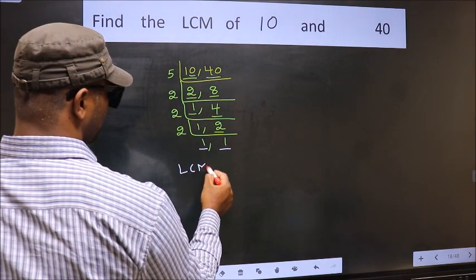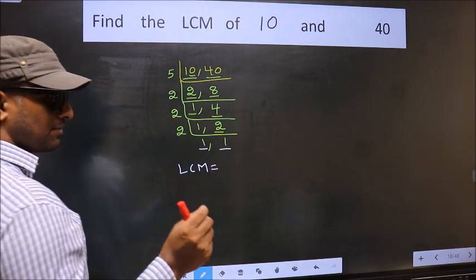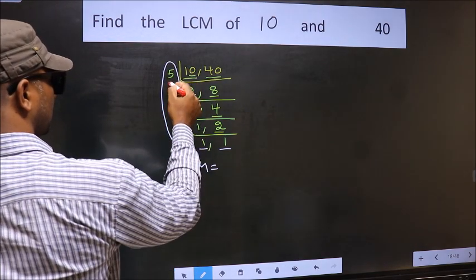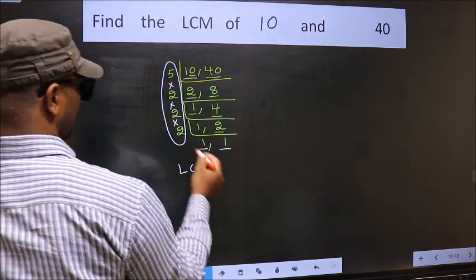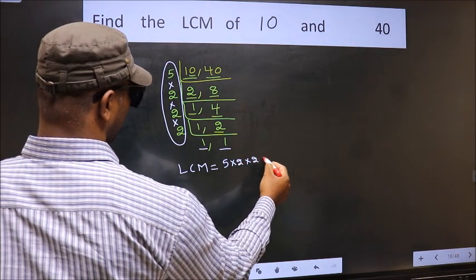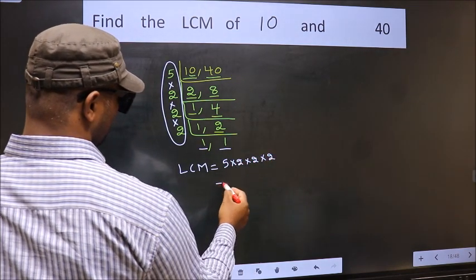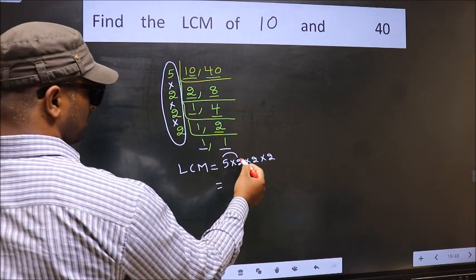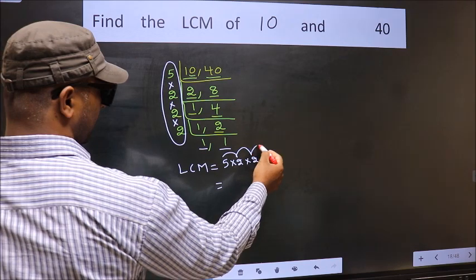So our LCM is the product of these numbers, that is 5 into 2 into 2 into 2. So let us multiply these numbers: 5 into 2, 10 into 2, 20 into 2,